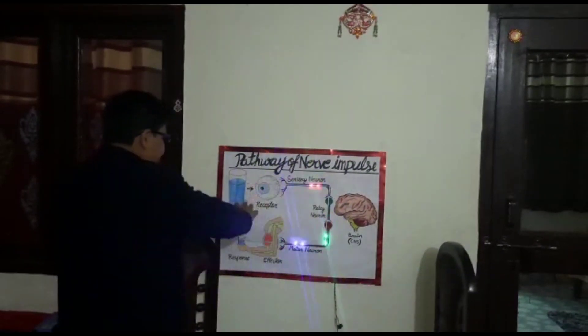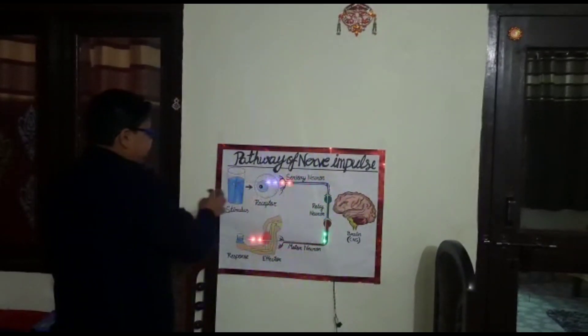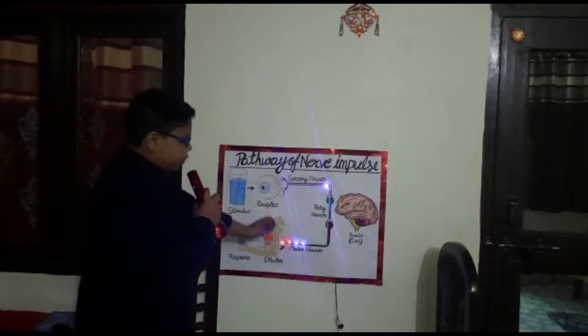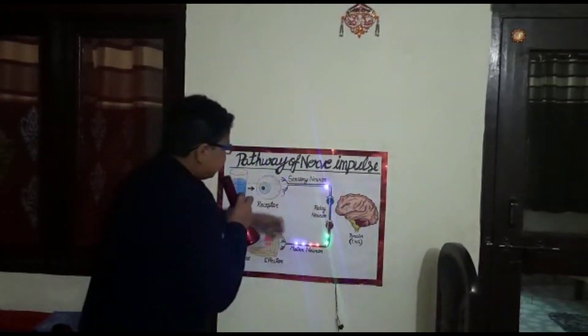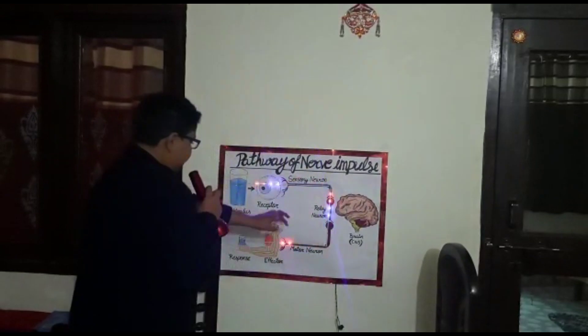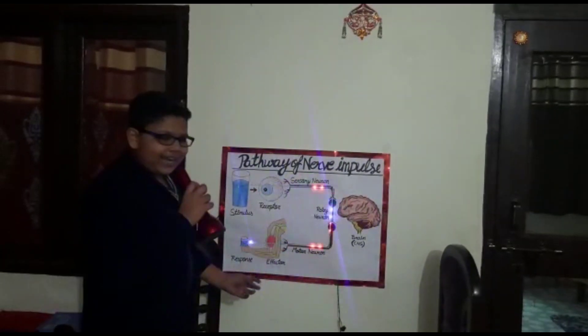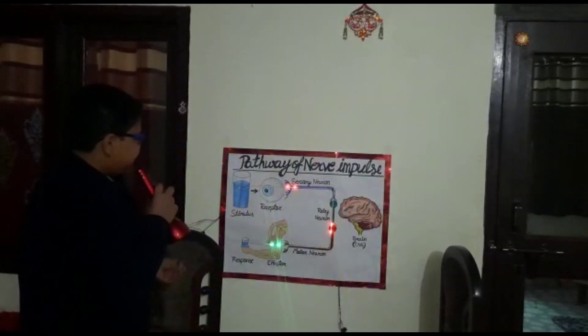Our eye sees a glass of water. It gives the message to the brain. The brain then gives the instructions to the arm to pick up the water and drink it.